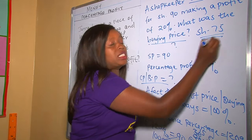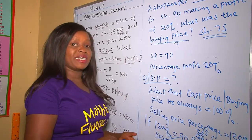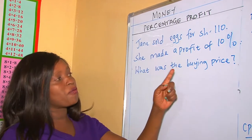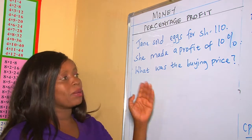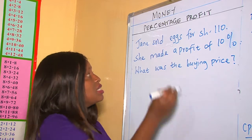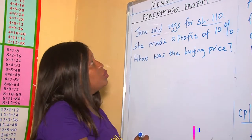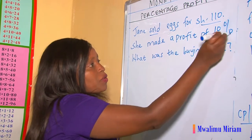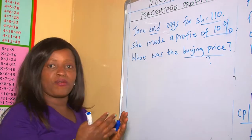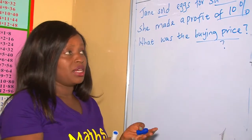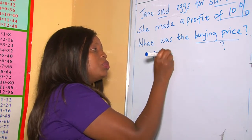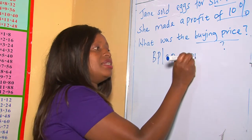Let's do our next example. Jen sold eggs for 110 shillings, making a profit of 10%. What was the buying price? Analyzing the question: we are given the selling price of 110 shillings and the percentage profit of 10%. We are looking for the buying price. Therefore, we use percentage relation, knowing that the buying price or cost price percentage is always 100%.